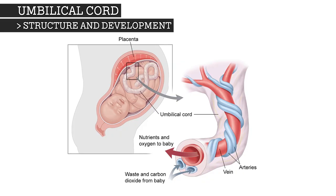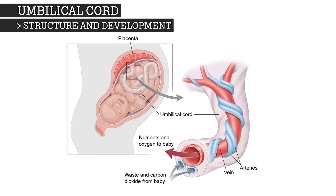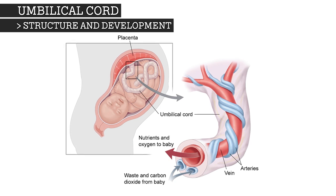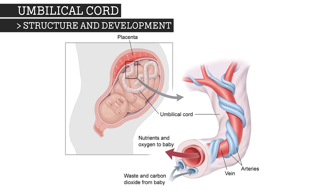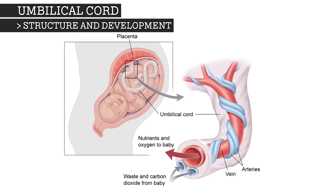The umbilical vein carries oxygenated, nutrient-rich blood to the fetal heart, and the two umbilical arteries carry deoxygenated, nutrient-depleted blood away from the fetal heart.